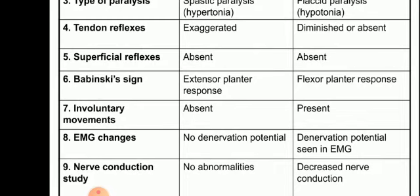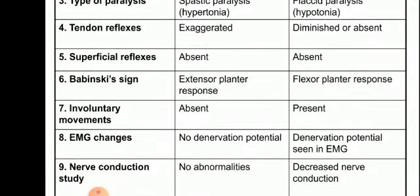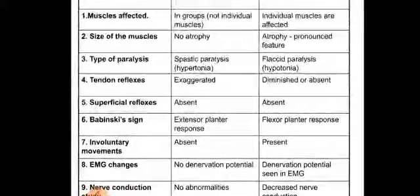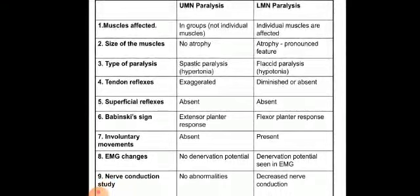Involuntary muscle movements such as twitches are absent in UMN lesion but present in LMN paralysis. EMG changes: no denervation potential in UMN; fibrillation and denervation potentials are seen in LMN. Nerve conduction study: no abnormalities in UMN paralysis; decreased nerve conduction in LMN paralysis because the nerve supplying the muscle is directly affected, and through the same nerve sensory impulses travel to the spinal cord. This is a very important tabular column — if asked to differentiate UMN and LMN paralysis, put it in tabular form to score good marks.